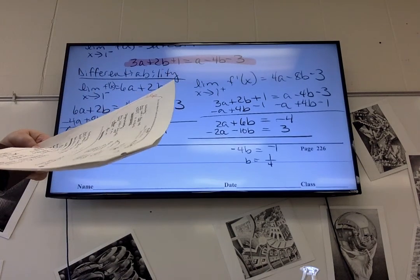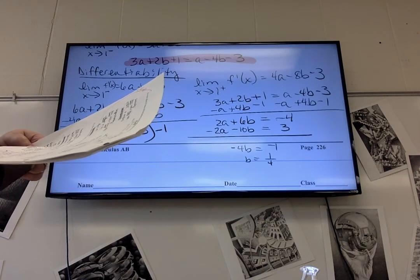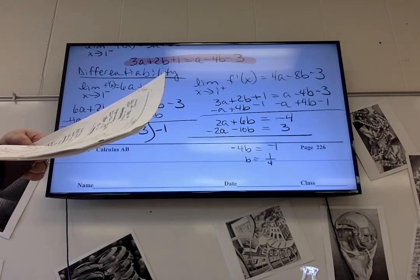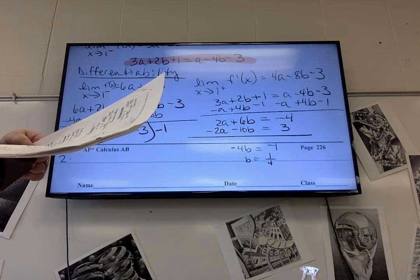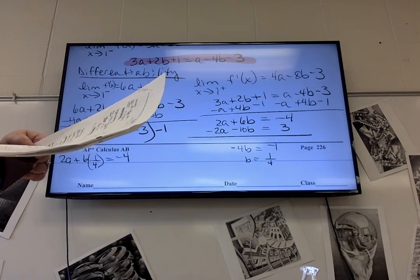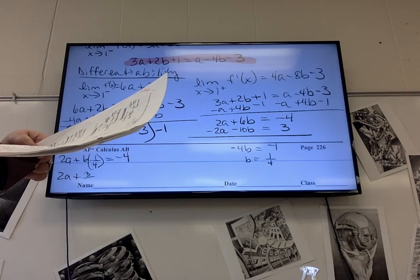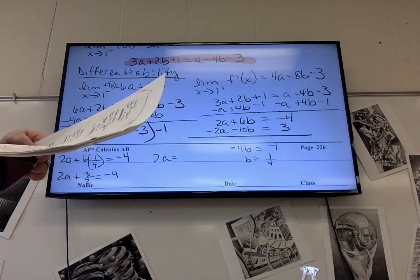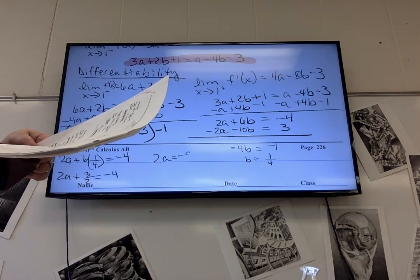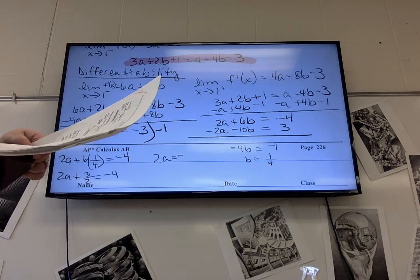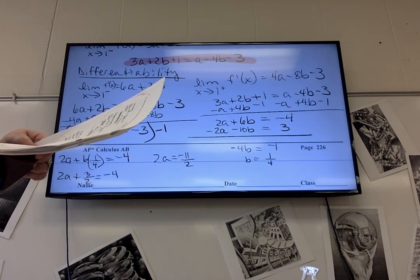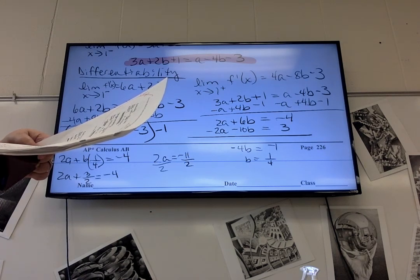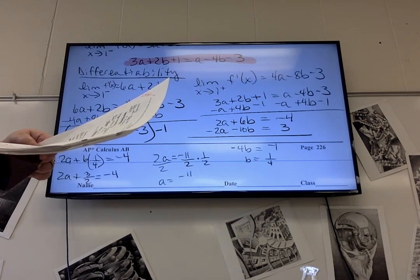And A, which equation do you want to plug it into? The smallest one. 2a plus 6b. So 2a plus 6 times 1 fourth equals negative 4. So 2a plus 3 halves, yes it is 6 fourths, equals negative 4. Subtract 1 and a half. You get 2a equals negative 9 over 2. Divide by 2 multiply by 1 half. 8 plus 3. Yeah. So A is negative 11 fourths.